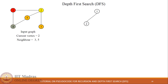Node 2 is added as the next level in the depth-first search tree, and node 1 becomes a visited node. Vertex 2 is the current node and it has 2 neighbors: 3 and 5. Because 3 is less than 5, we choose vertex 3.